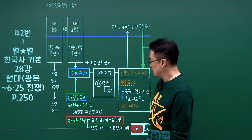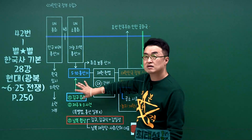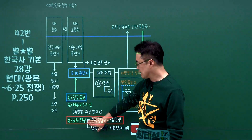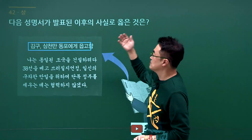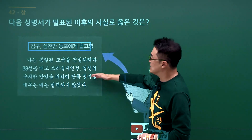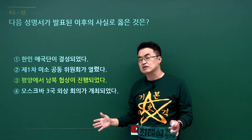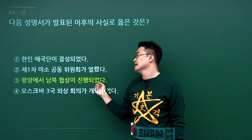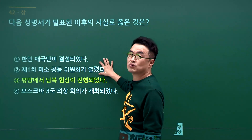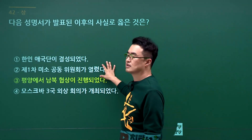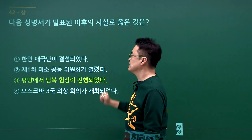김구와 남북협상 문제입니다. 5.10 총선에 반대하기 위해 김구가 3천만 동포에게 읍고함을 발표했고 이후 북한으로 가 남북협상을 시도했습니다. 문제에서 3천만 동포 읍고 이후의 사실로 평양에서 남북협상이 진행되었다가 정답입니다. 3번입니다. 한인애국단 결성은 일제강점기이고, 1차 미소공동위원회와 모스크바 삼상회의는 김구의 읍고함 이전입니다. 정답은 3번입니다.